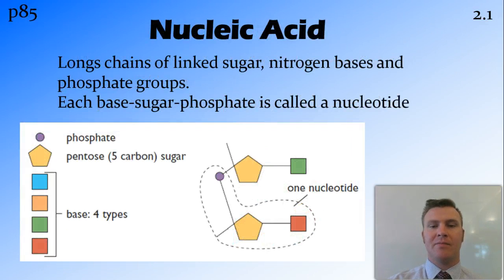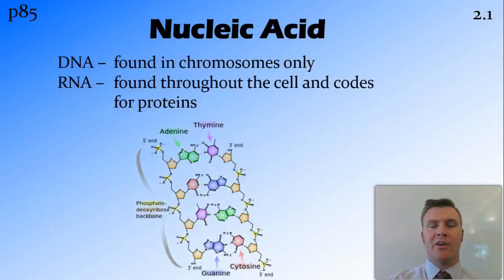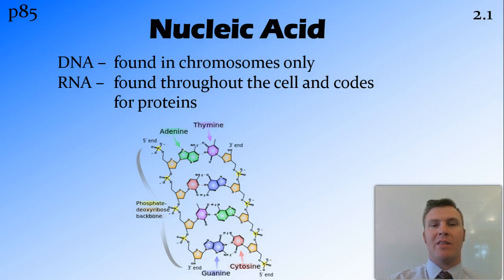Nucleic acids are long chains of nucleotides. A nucleotide consists of a sugar, a nitrogen base, and a phosphate group. These are very important, being the building blocks of life. The nucleic acids provide the backbone for DNA — deoxyribose nucleic acid — found in the chromosomes, as well as RNA — ribose nucleic acid — which is found throughout the cell and codes for proteins.